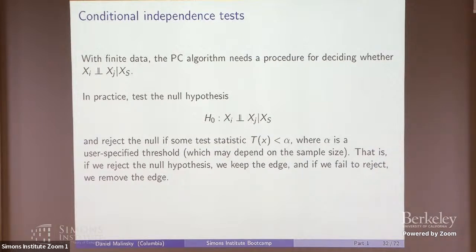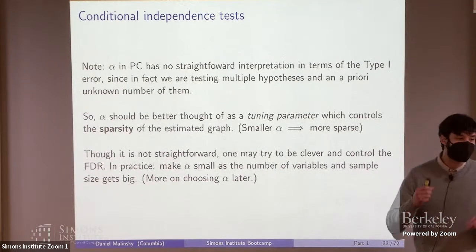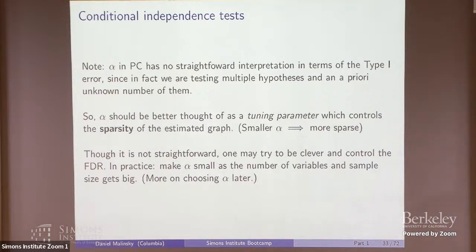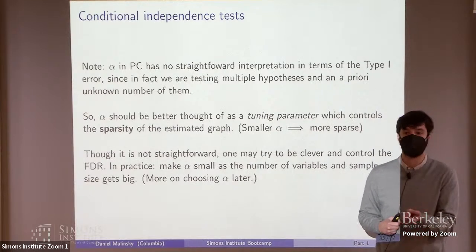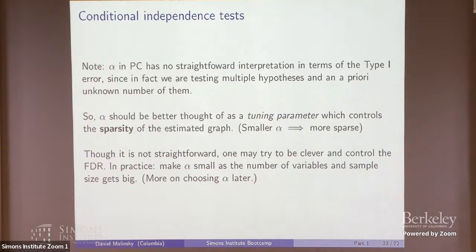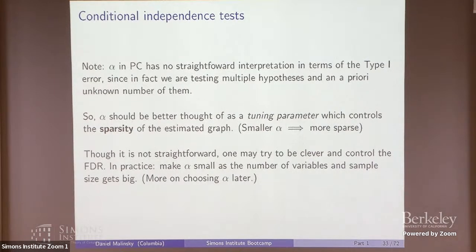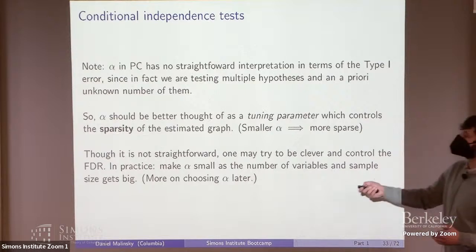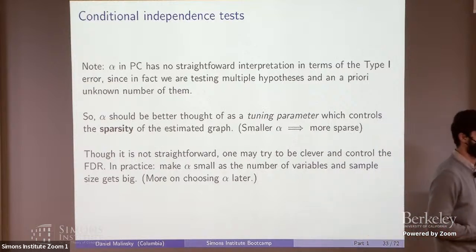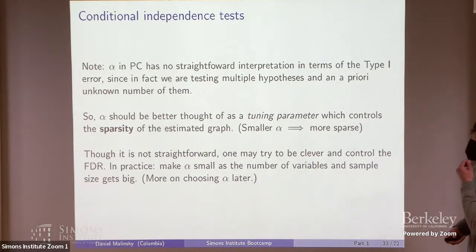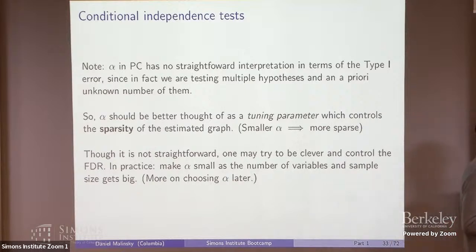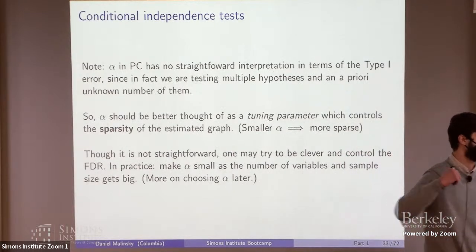Alpha, the significance threshold, controls the sparsity of the graph you learn. As alpha gets smaller, it becomes harder to retain an edge, so the graph gets sparser. Alpha bigger means a denser graph. Because you're doing many hypothesis tests of conditional independence, alpha by itself doesn't have a straightforward interpretation in terms of type one error, since the number of tests varies as you perform the algorithm. That's why alpha is often thought of as a tuning parameter controlling sparsity.